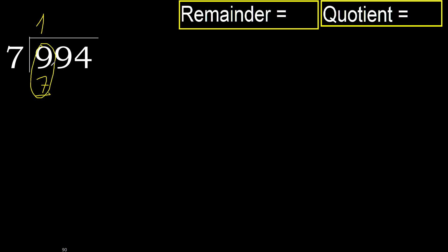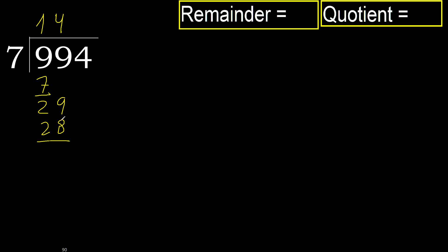Next, 29. 7 multiplied by 5 is 35, which is greater. Multiply by 4: 28 is not greater. Subtract: 29 minus 28 is 1.